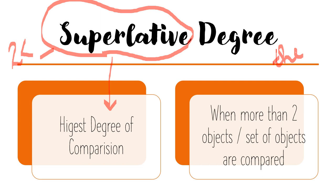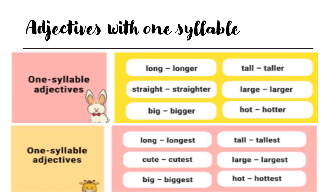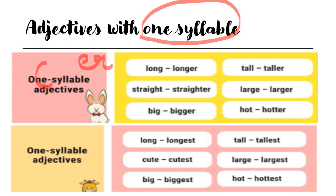Now I am going to come to the rules — that is why syllables are really important. How do we change simple adjectives into comparative and superlative form? Rule number one: adjectives with one syllable. For all adjectives with one syllable sound, we add -er to make it comparative and we add -est to change it into superlative degree.